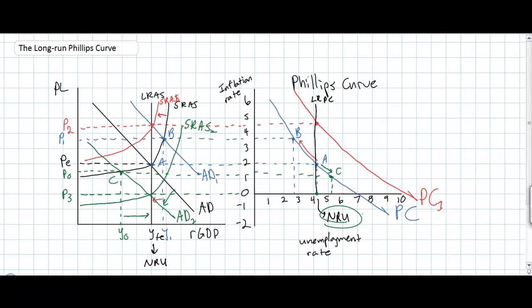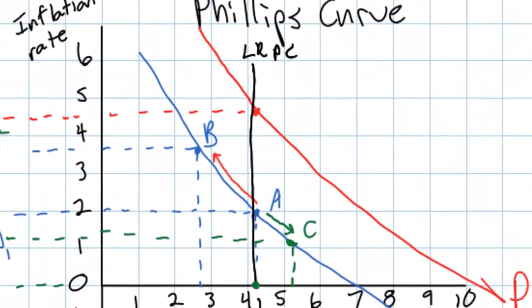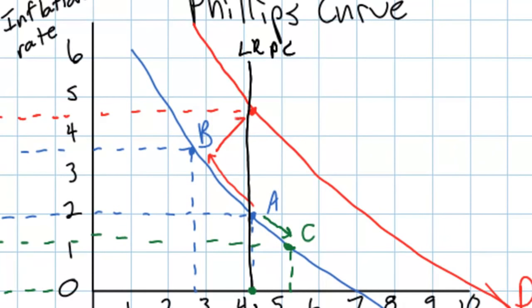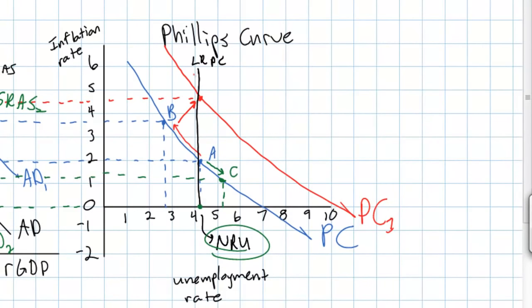Looking at all the evidence, an increase in aggregate demand in the short run causes a movement along the short-run Phillips curve, but following all long-run adjustments, output always returns to the full employment level and therefore unemployment always returns to the natural rate. Inflation may rise or fall depending on the level of aggregate demand in the economy, but unemployment will always remain at its natural rate. What we end up with is a vertical long-run Phillips curve, vertical at the natural rate of unemployment.